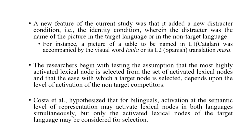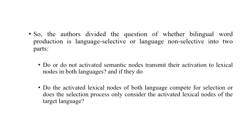Costa and colleagues hypothesized that semantic activation may activate lexical nodes in both languages, but only the activated lexical nodes of the target language may be considered for selection. They divided their question into two parts: First, do activated semantic nodes transmit their activation to lexical nodes in both languages? And second, do the activated lexical nodes of both languages compete for selection, or does selection only consider activated lexical nodes of the target language? This framework allows two discrete, testable questions to be addressed with evidence.